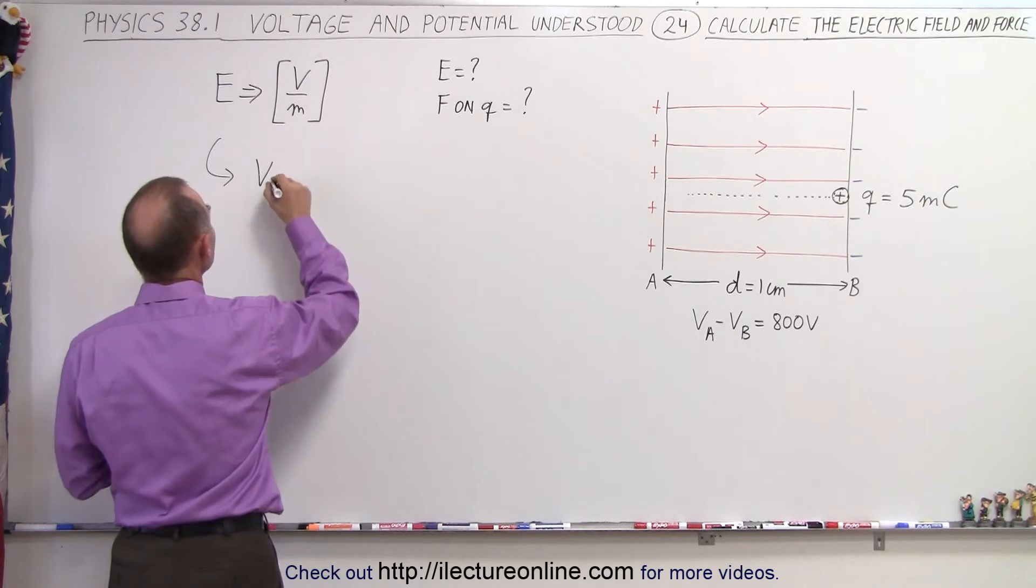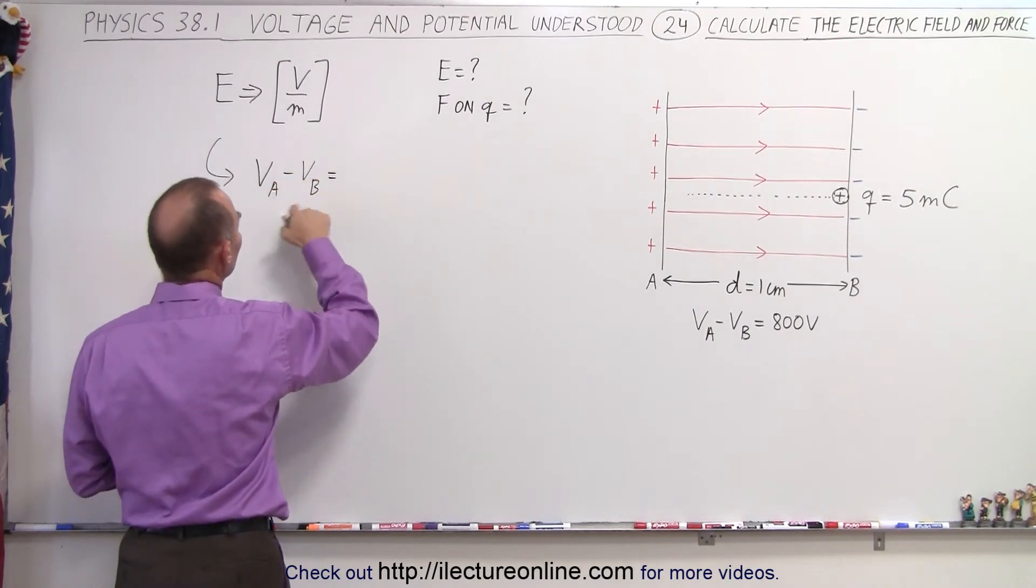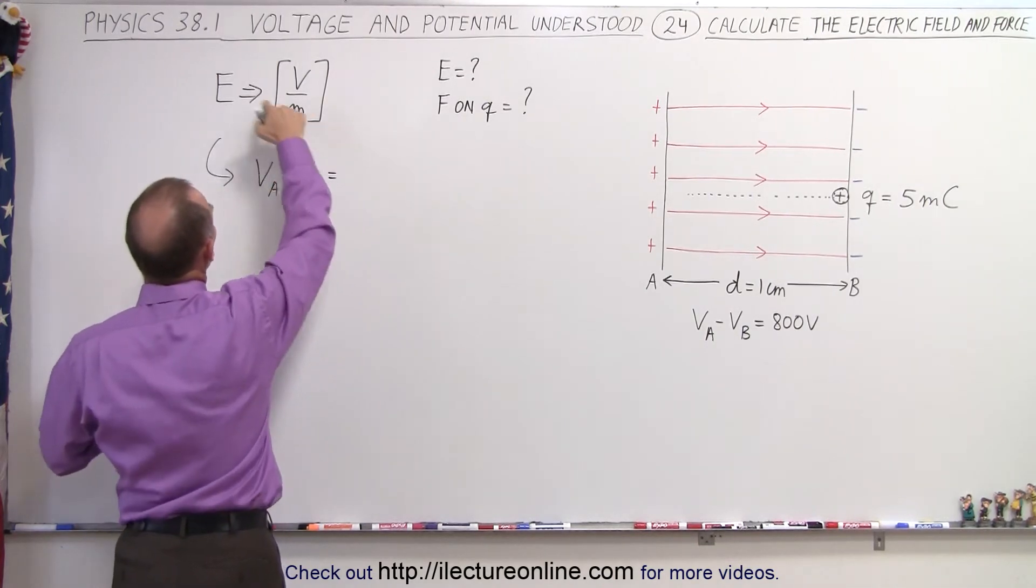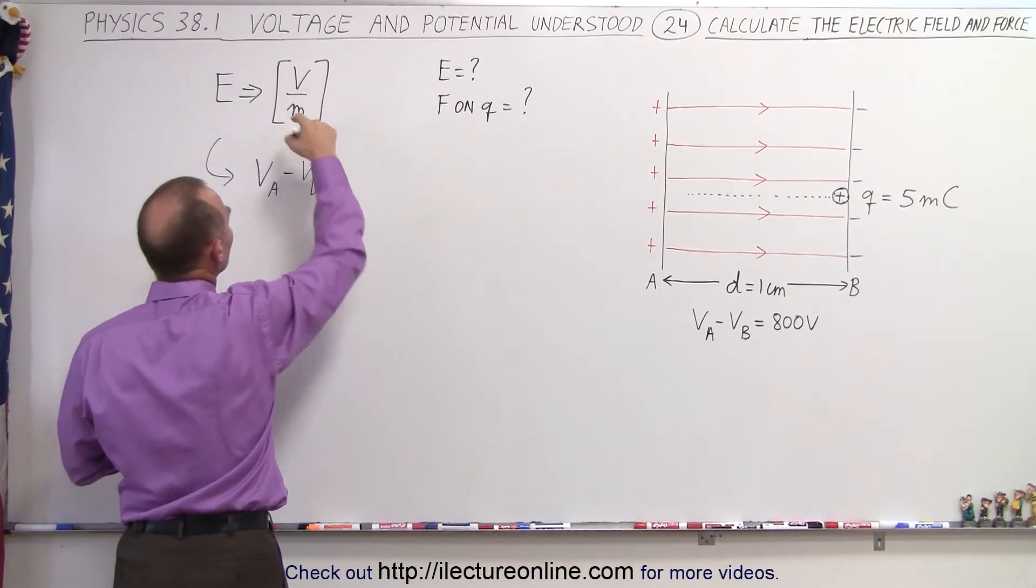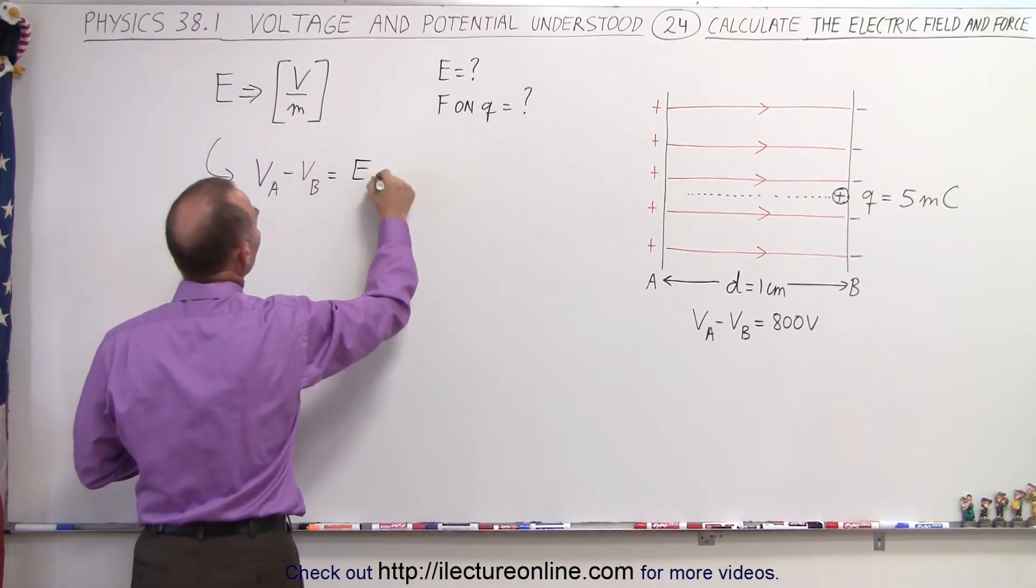So V_A minus V_B, which is a potential difference, is therefore going to be equal to the product of the electric field times the distance, E times D.